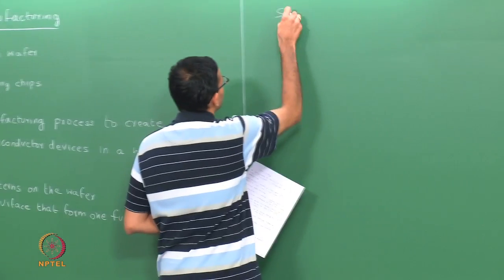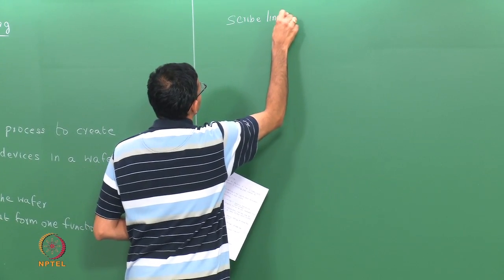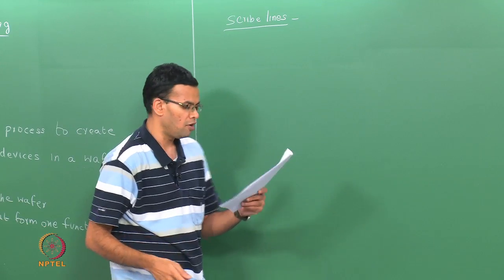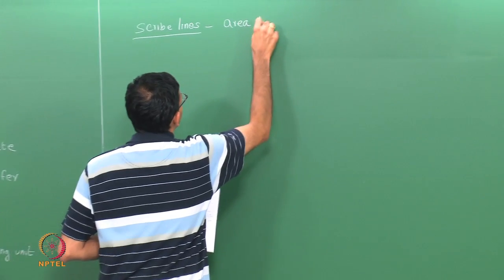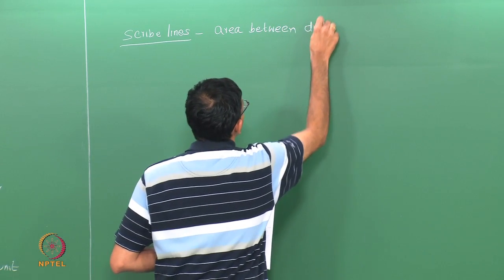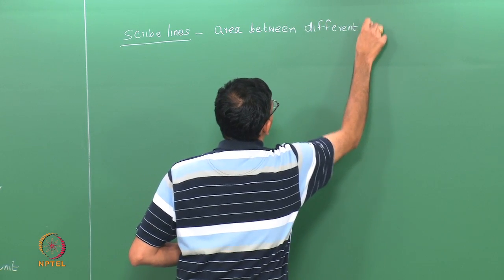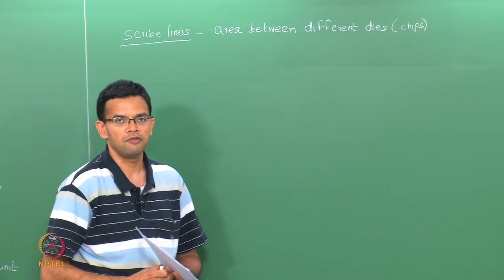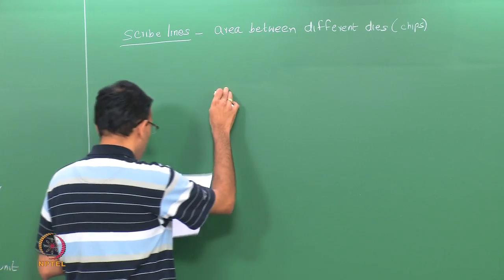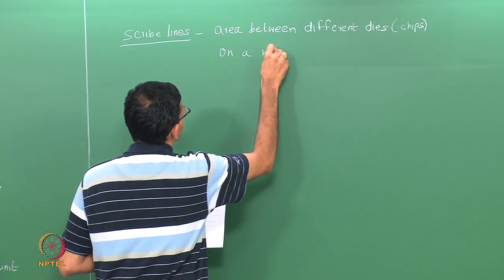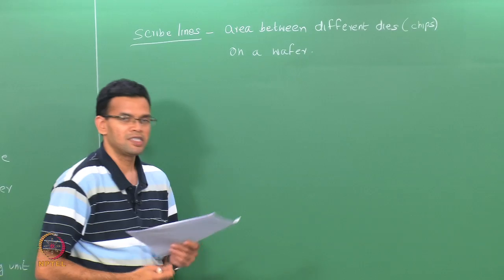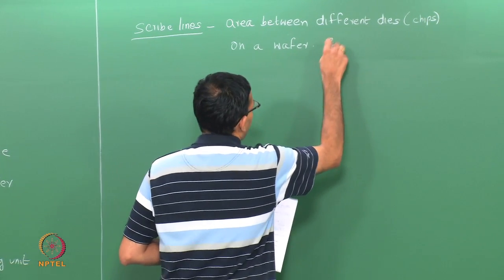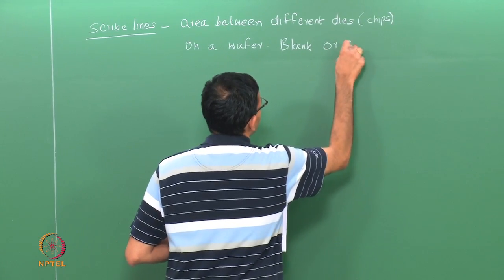Scribe lines is another term. This refers to the areas between the different chips or dice on a given wafer. A wafer is made up of a large number of dice, and the area or space between them is called the scribe line. A scribe line can be blank, or it may also have some additional circuits that are especially used for testing.